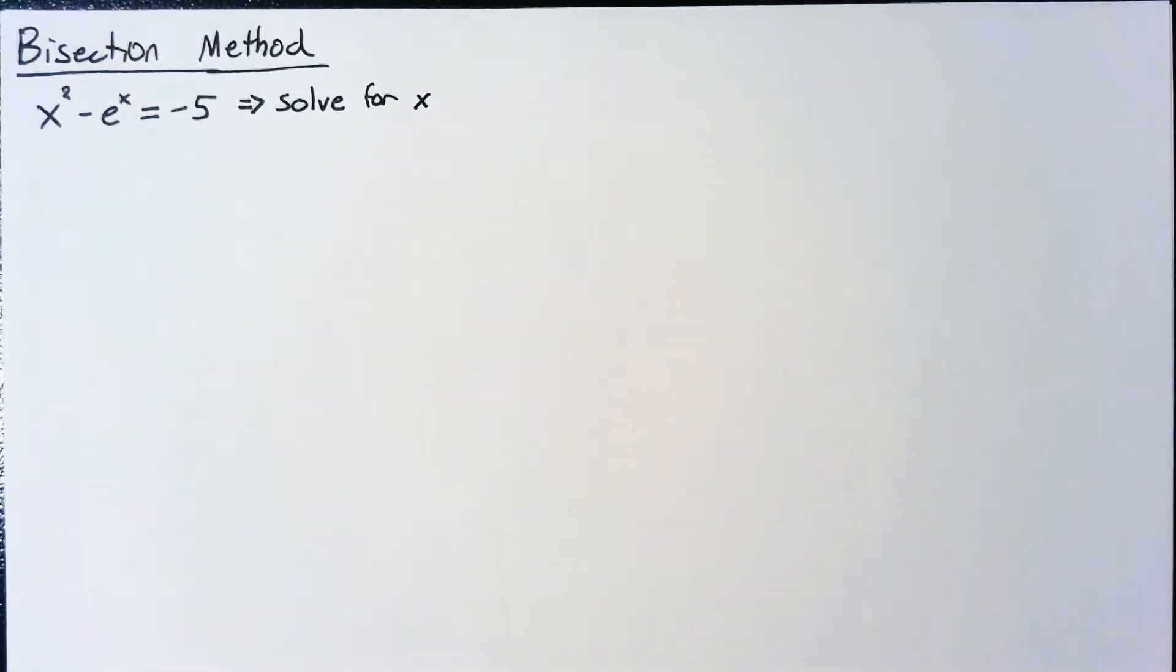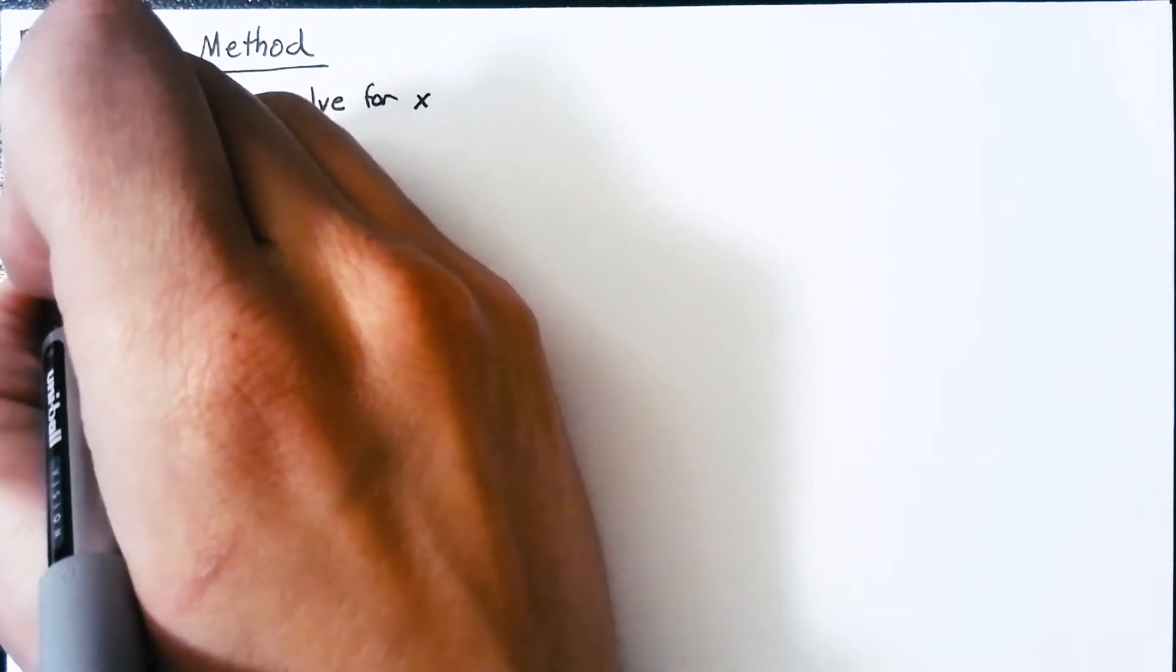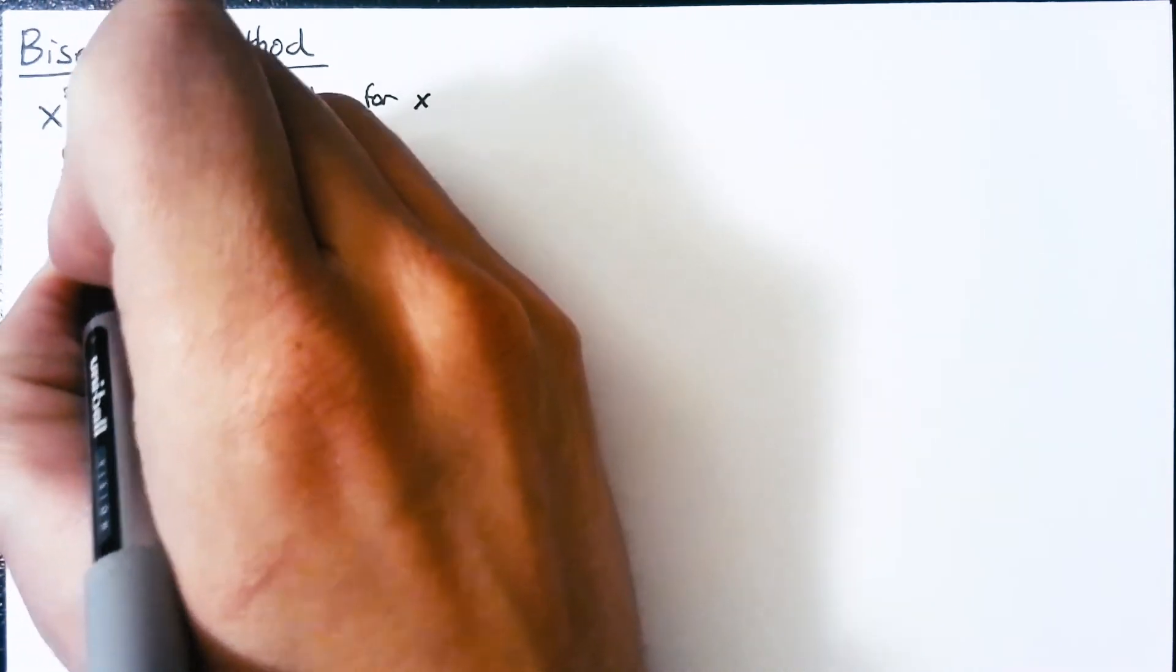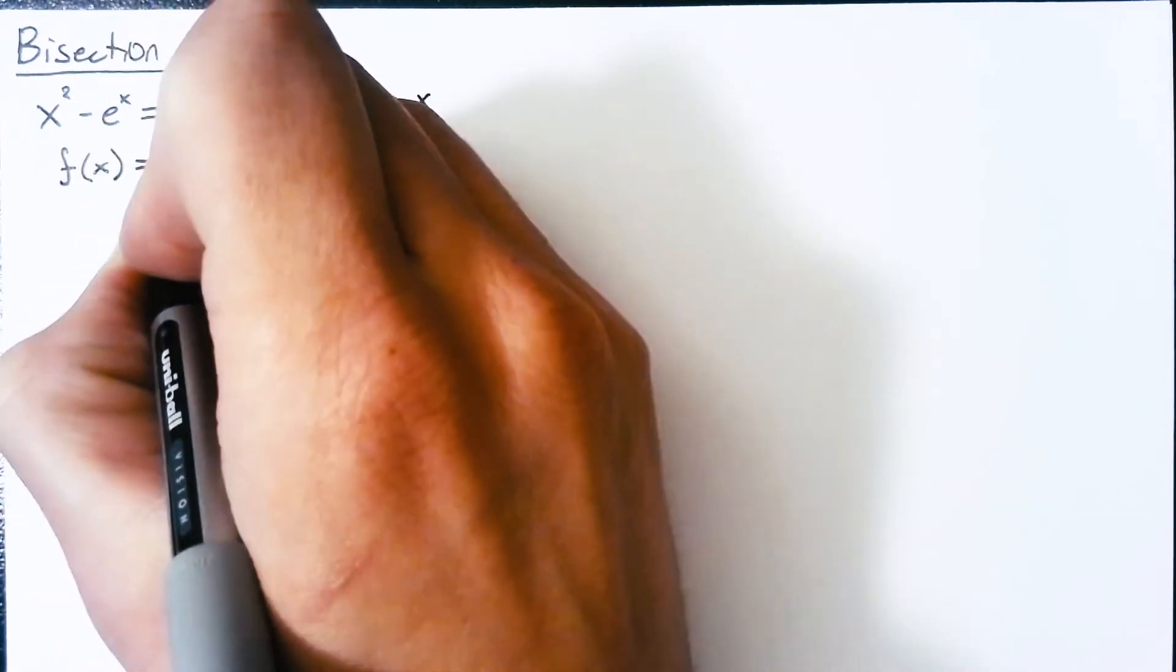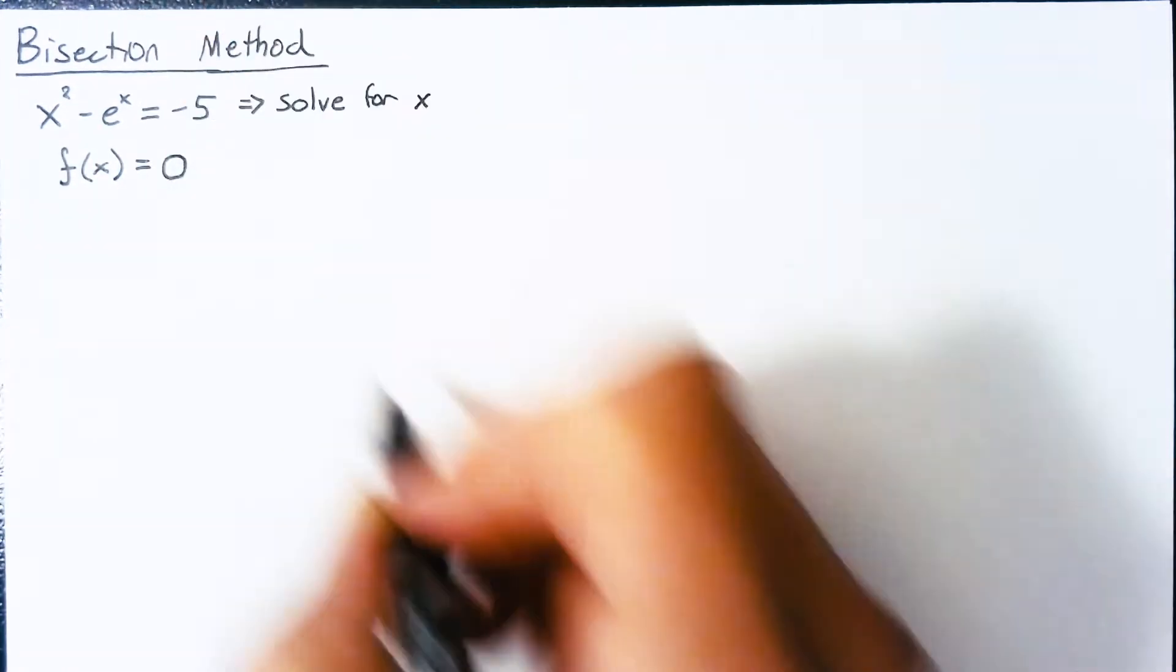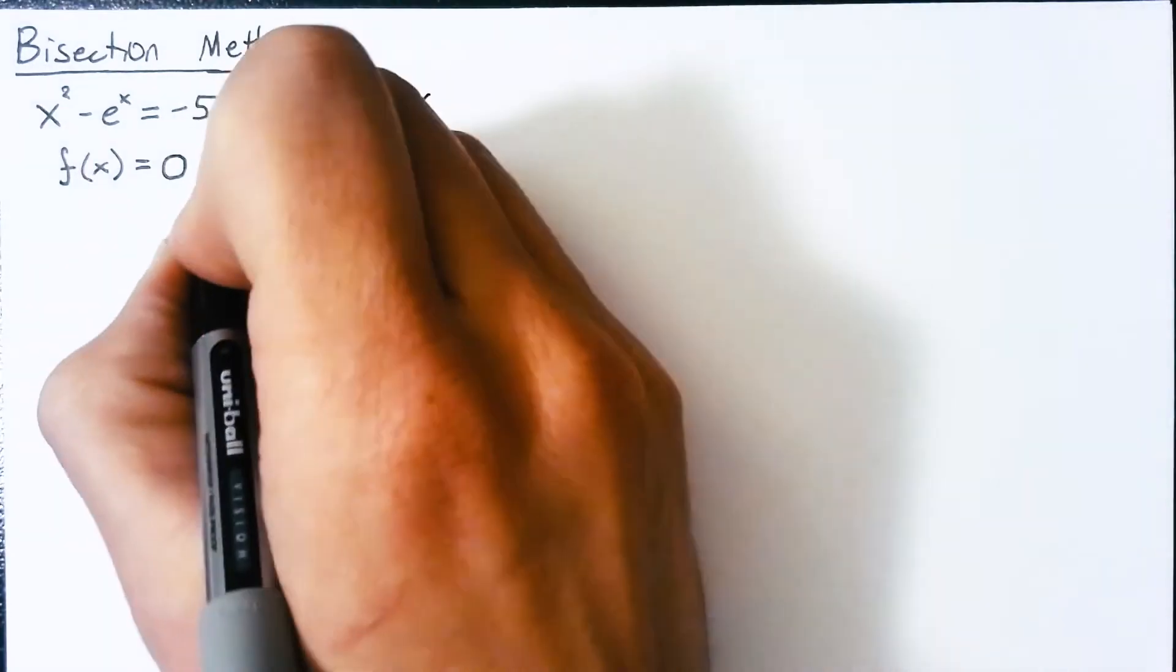Now, the first thing we need to do is actually change this equation around a little bit because our method specifies that we need a function that we are going to solve for 0. So this is an easy fix.